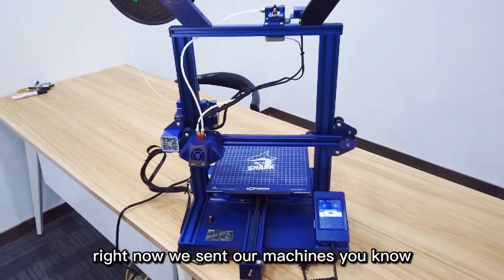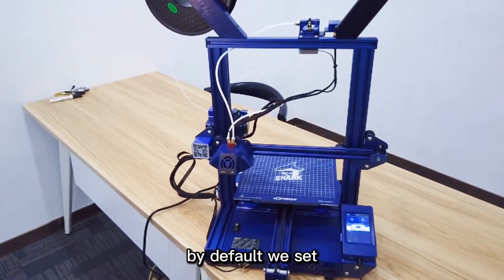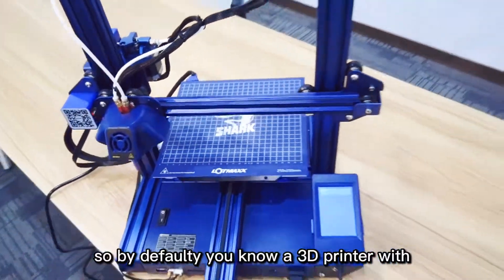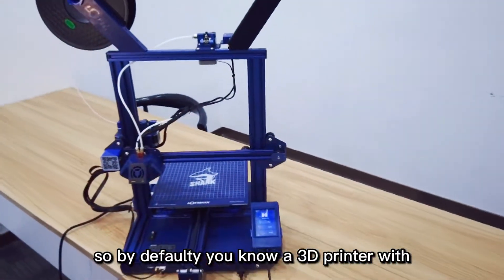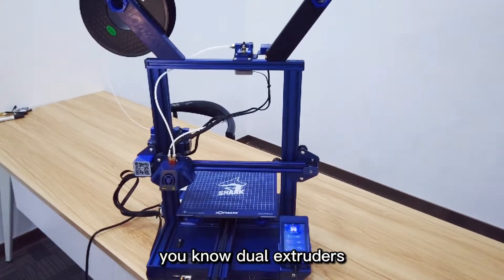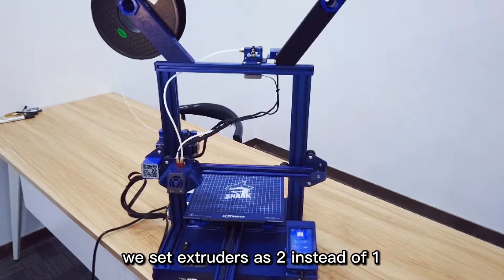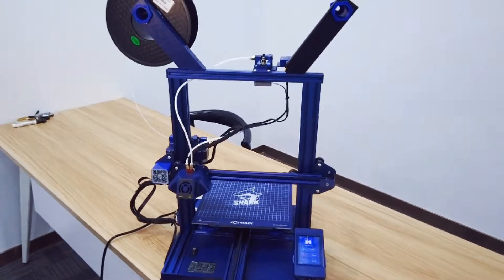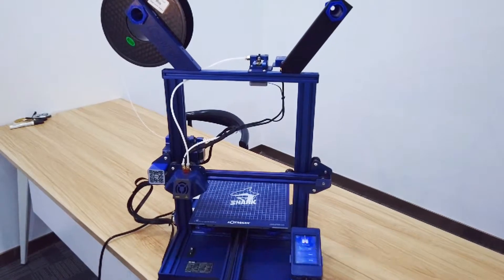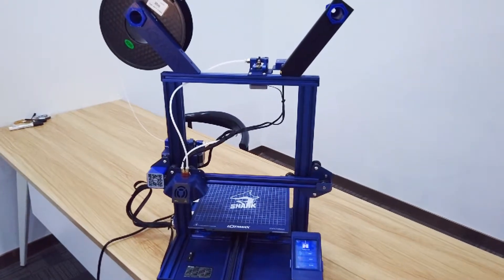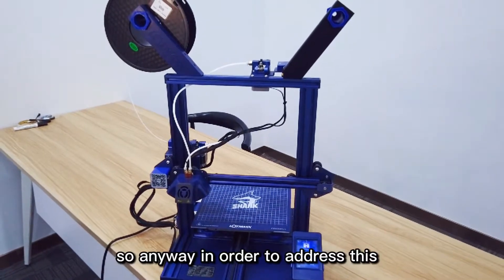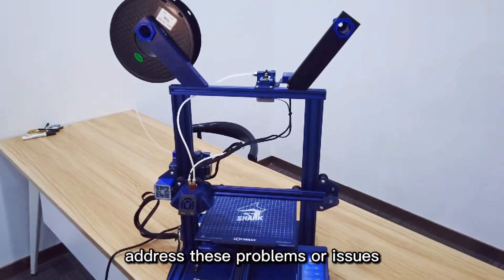By default we send the printer with two extra extruders. By default you will get a 3D printer with dual extruders, so in the firmware we set extruders to two instead of one. But previously on Kickstarter and other platforms, we usually sold the second extruder as an add-on. So in order to address these problems or issues, it's really simple.